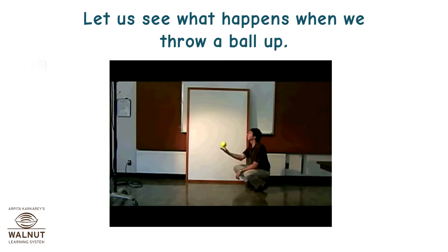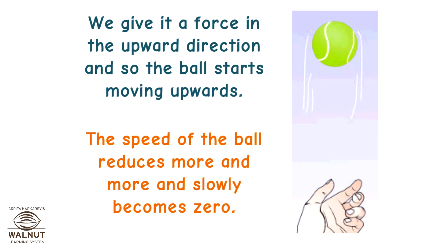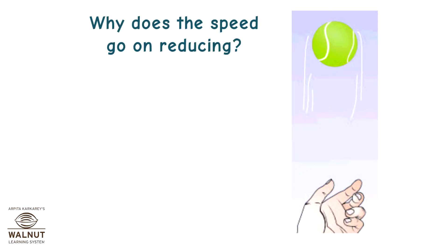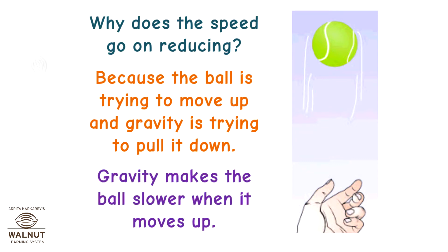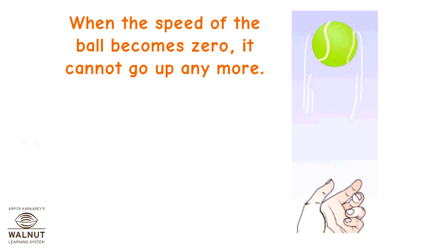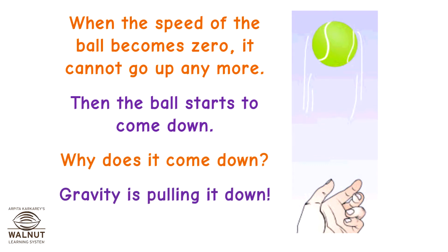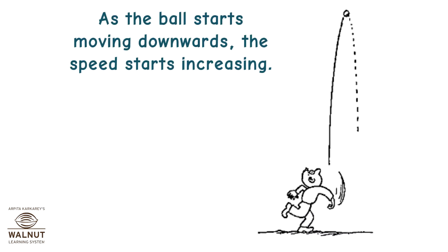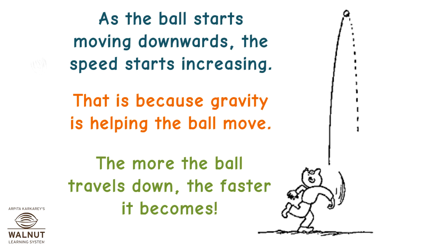Let us see what happens when we throw a ball up. We give it a force in the upward direction and so the ball starts moving upwards. The speed of the ball reduces more and more and slowly becomes zero. Why does the speed go on reducing? Because the ball is trying to move up and gravity is trying to pull it down. Gravity makes the ball slower when it moves up. When the speed becomes zero, it cannot go up any more, then the ball starts to come down because gravity is pulling it down. As the ball starts moving downwards, the speed starts increasing because gravity is helping the ball move. The more the ball travels down, the faster it becomes.